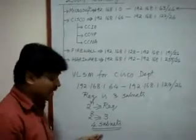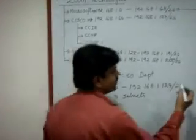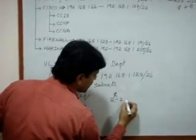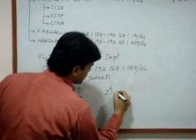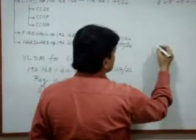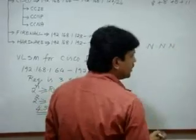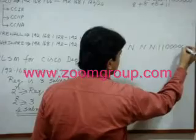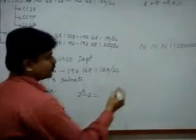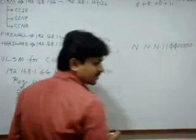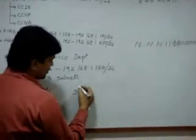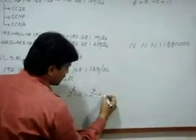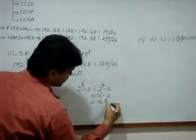Now I need to calculate how many IP addresses (hosts) are available on each subnet, using the formula 2^h - 2, where h is the number of host bits. Since we are doing VLSM, we retain the FLSM bits and convert two more zeros to ones. After conversion, four zeros remain as host bits, so h=4. Therefore 2^4 = 16, and 16 - 2 = 14 hosts per subnet.